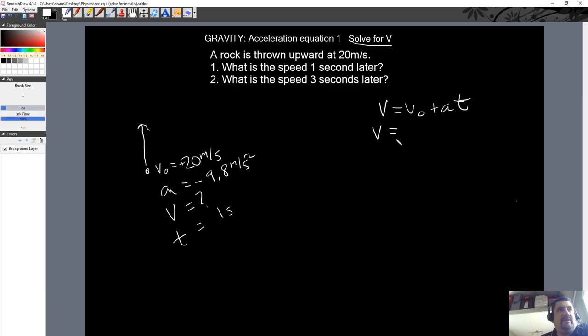So let's put that information in. So final velocity, we don't know it. Initial velocity is 20, positive, right? Plus negative 9.8 times t, which is one. Okay, so that's going to be negative 9.8. And this is 20. And final velocity is going to be 10.2.